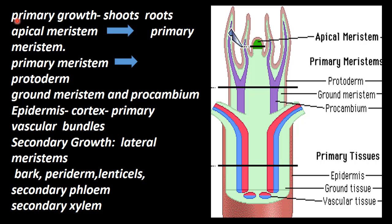Primary growth of the plant is given by the apical meristome. Through continuous division, the apical meristome produces the primary meristome. The primary meristome differentiates into protoderm, ground meristome, and pro-cambium.